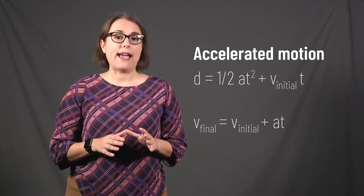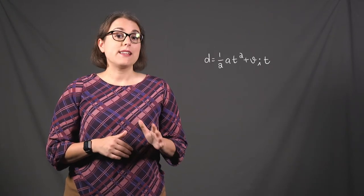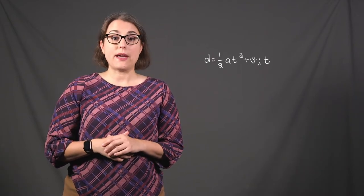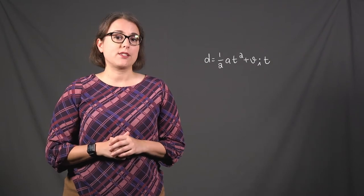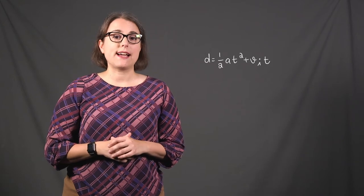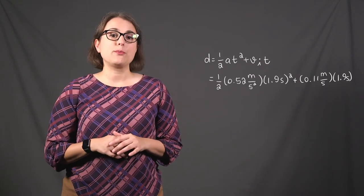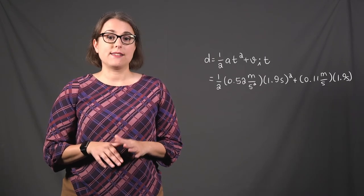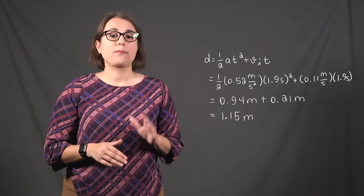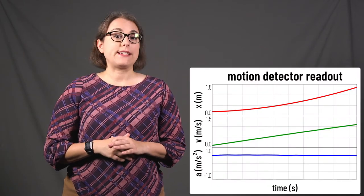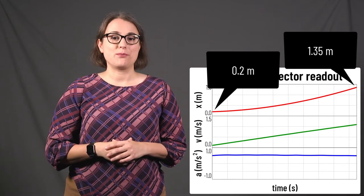The equations we can use when acceleration is present are different. Distance equals one-half times acceleration times time squared plus initial velocity times time. Let's use that equation to verify the distance moved by the cart: with acceleration 0.52 meters per second squared, time 1.9 seconds, and initial velocity 0.11 meters per second, one-half times 0.52 times 1.9 squared plus 0.11 times 1.9 equals 1.15 meters. This agrees exactly with the motion detector readout, which recorded an initial position of 0.2 meters and a final position of 1.35 meters.